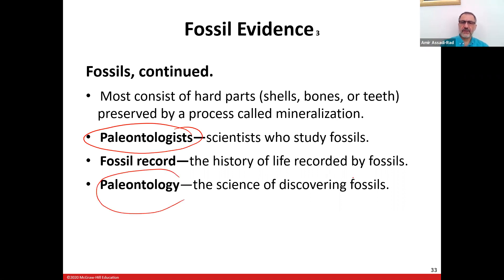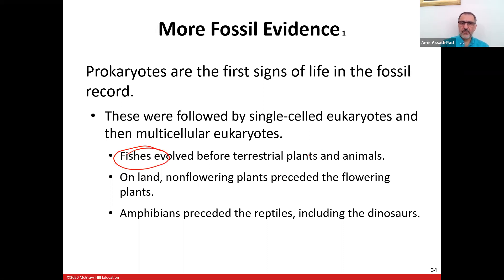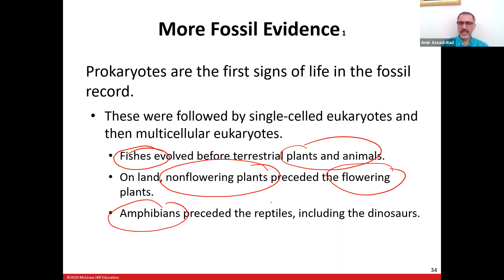In the fossil record, prokaryotes appear as the first signs of life, followed by single-celled eukaryotes. Fishes evolved before terrestrial animals. On land, non-flowering plants — like evergreens with cones — appeared before flowering plants. Amphibians appeared before reptiles, including the dinosaurs.